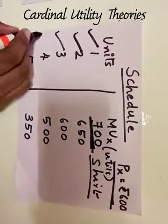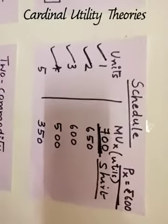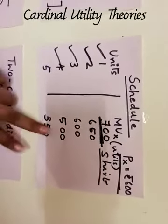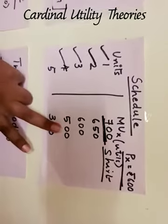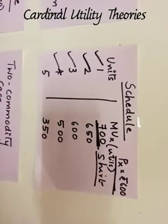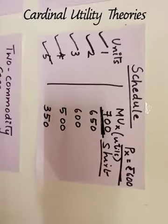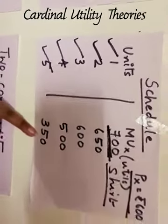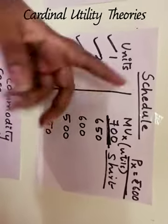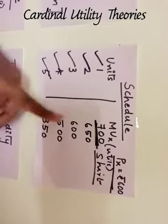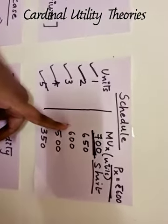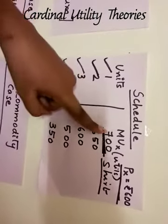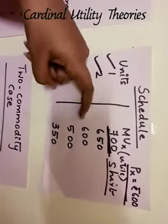In the third month, he buys the fourth shirt — utility is 500 utils. Then in the fifth month, he buys the fifth shirt and the utility he arrives at is 350. So, MU goes on diminishing. That is the first assumption we stated — the law of diminishing marginal utility operates. Marginal utility is throughout diminishing.